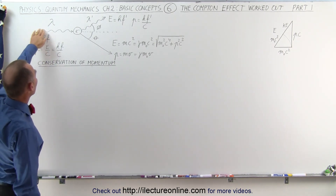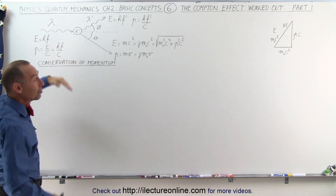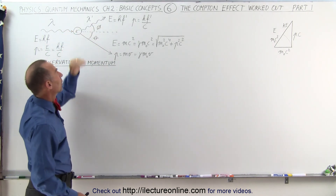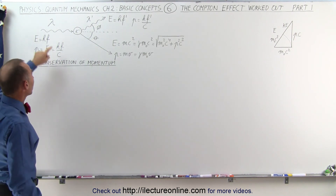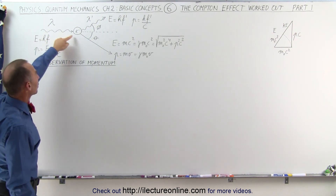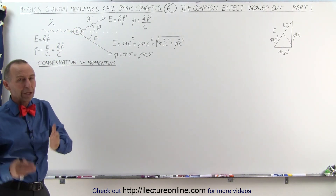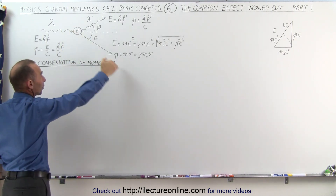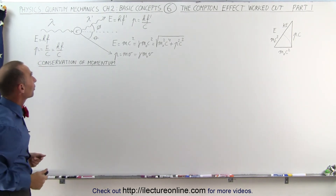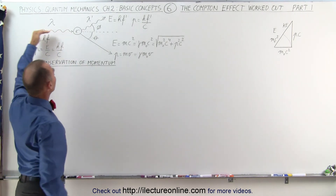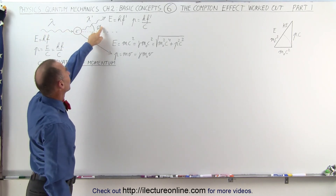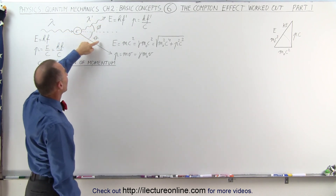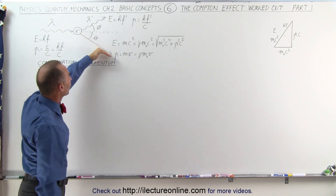Here we have a photon which approaches an electron. If it interacts with the electron, it will give the electron a bump. The electron will go off in one direction, and the photon will go off in another direction. Notice that the angle relative to the initial direction of the photon is phi and theta. Phi is the relative angle for the photon after the collision, and theta gives you the angle of the direction for the electron after the collision.